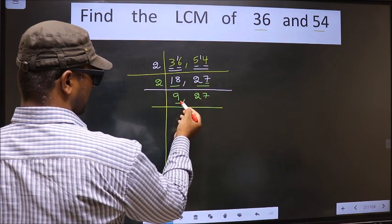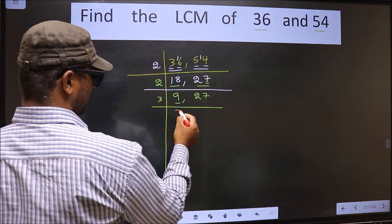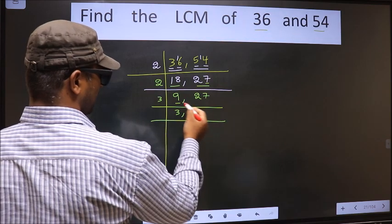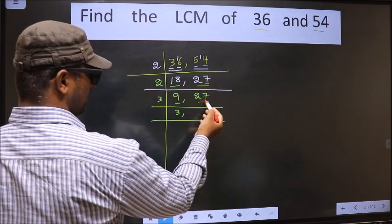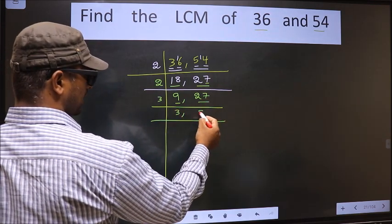Here we have 9, 9 is 3, 3's, 9. The other number, 27. When do we get 27 in 3 table? 3, 9's, 27.